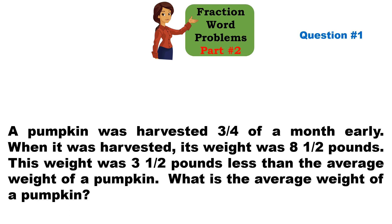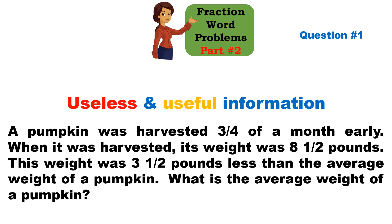To solve question number one, as we did in the previous video, we are going to identify the useless and the useful information given in the question. Sometimes there is information in a question that is not useful to arrive at the solution — that information is useless and you have to watch out for it and ignore it. In this question, the pumpkin was harvested three-fourths of a month early.